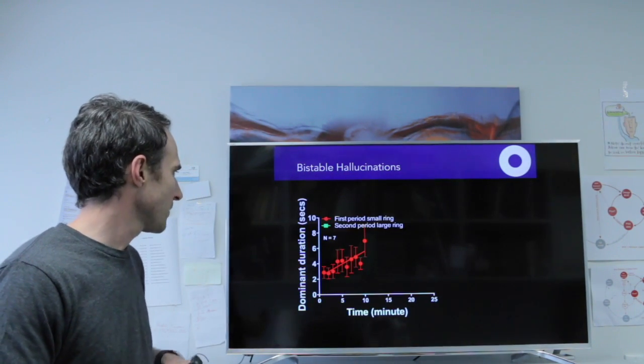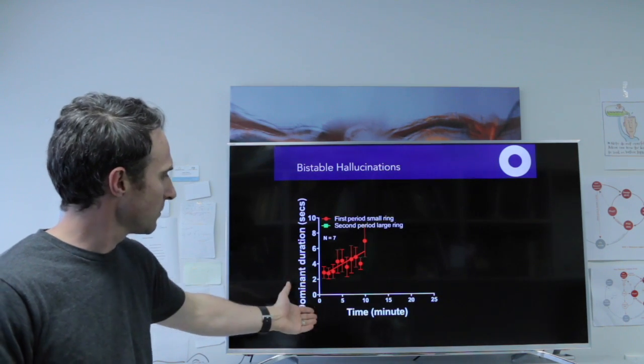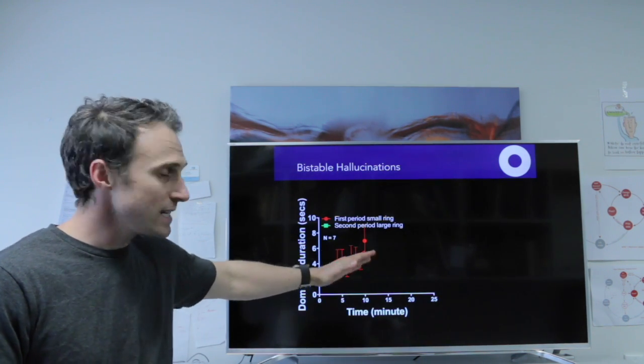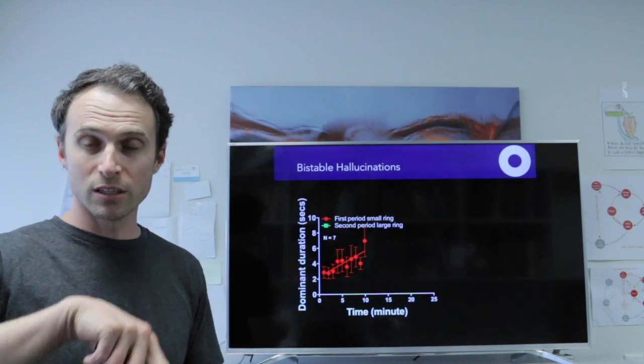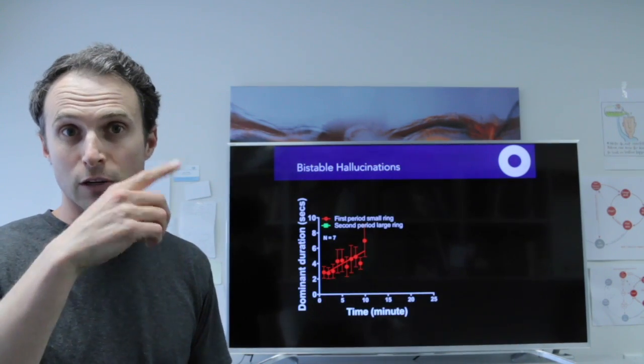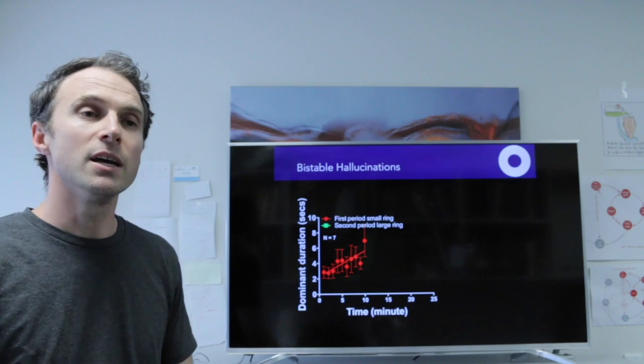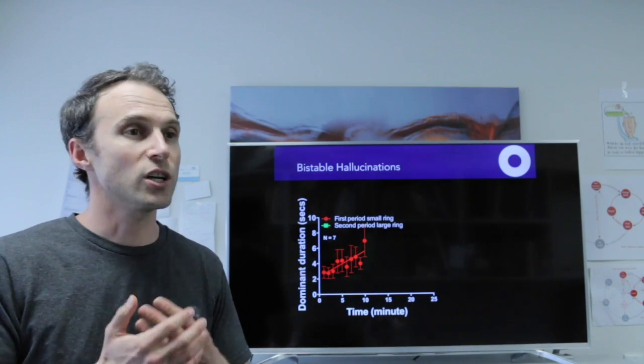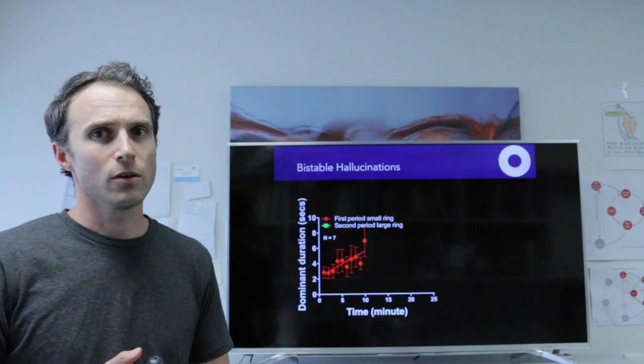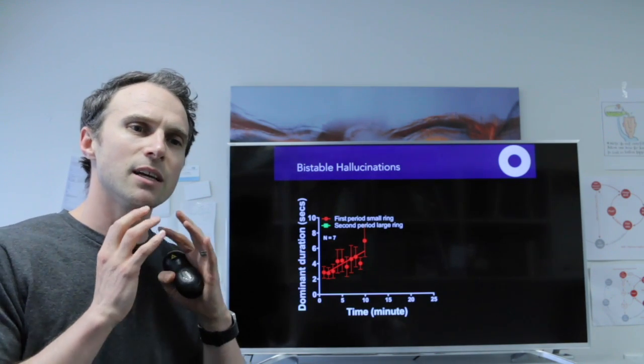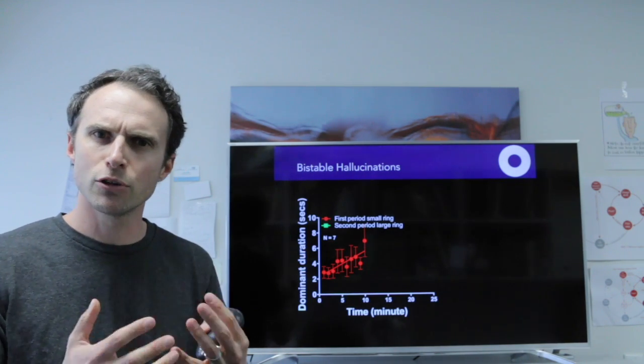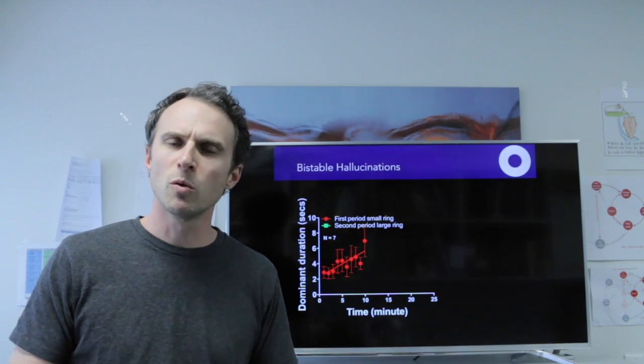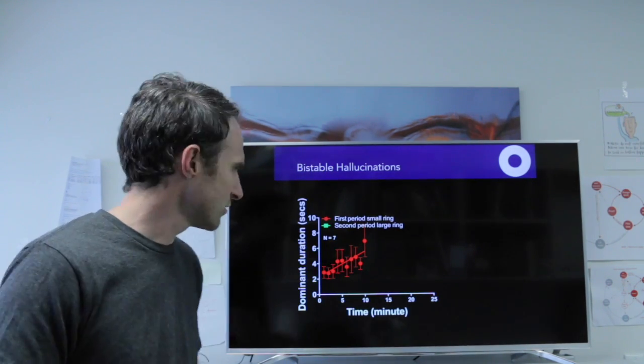So here's some data. We're showing the alternation duration and then we have time on this axis. And we can see the durations are increasing. So the alternations in the direction of the hallucination are slowing down over time. So this is showing us that we see adaptation in this hallucination, just like visual perception. So that's interesting because it tells us that the hallucinated content, the flicker induced hallucinations, obey the same basic principles as normal visual perception.